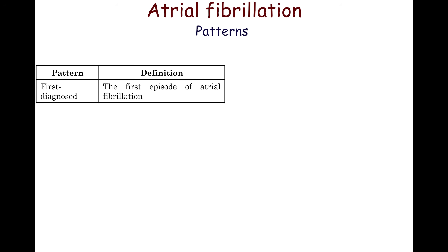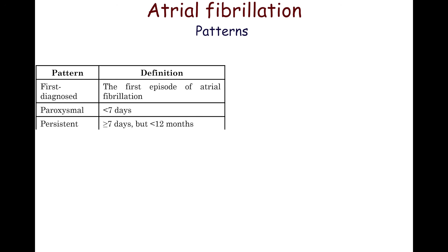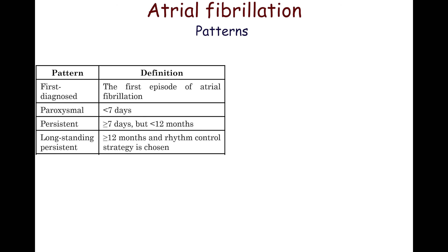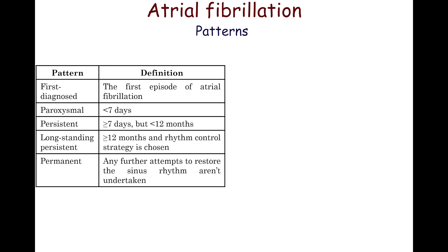Atrial fibrillation is classified according to its pattern. There are five main patterns. First-diagnosed atrial fibrillation denotes the first episode, irrespective of duration or symptoms. Paroxysmal atrial fibrillation denotes episodes that terminate spontaneously or with intervention within seven days of onset. Persistent atrial fibrillation lasts from seven days to one year. Long-standing persistent continues more than 12 months but a rhythm control strategy is still considered. Permanent atrial fibrillation is accepted by both patient and physician, and no further attempts to restore sinus rhythm are undertaken.